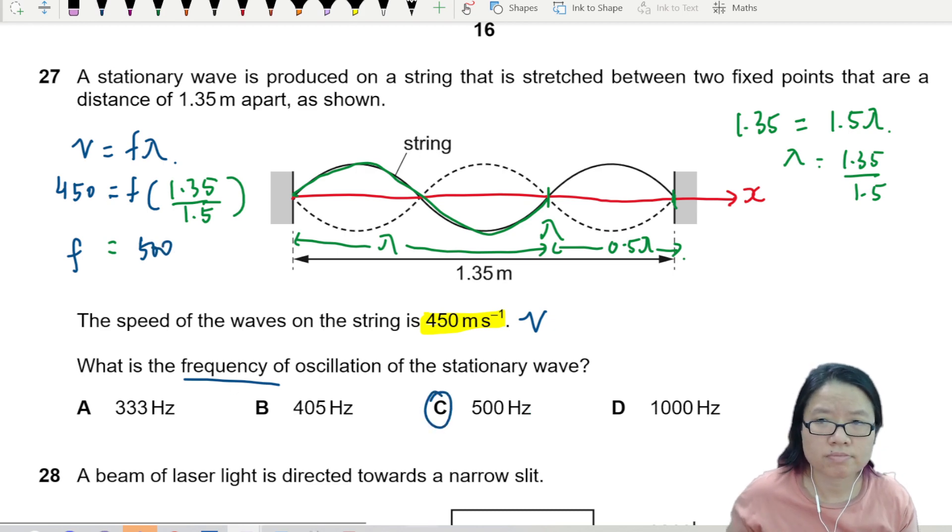All right, so sketch the wave, calculate the lambda, use v equals f lambda. That would be your standing wave strategy.